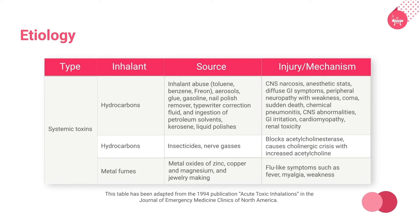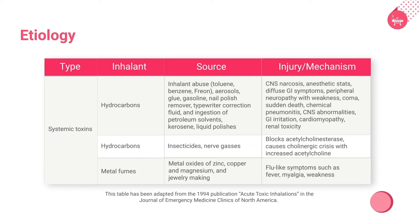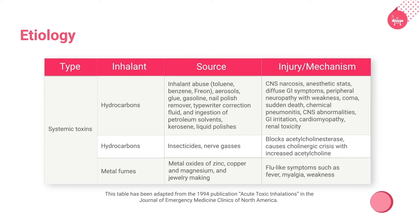Organophosphates are found in insecticides and nerve gases and act by blocking acetylcholinesterase. The inhalation of metal fumes causes flu-like symptoms such as fever, myalgia, and weakness.